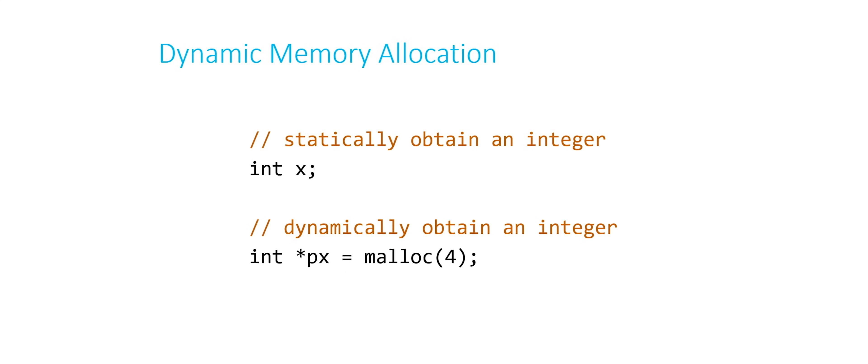And the reason we say four here is because there are four bytes in an integer. I easily also could have used the sizeof operator, which is available in C. Basically, you pass it a type.